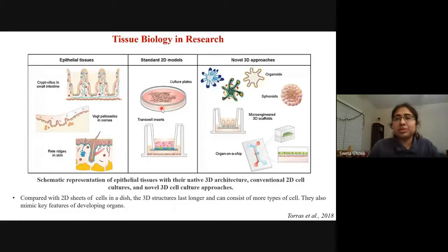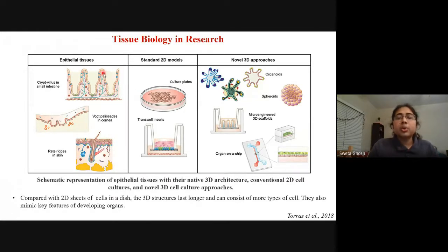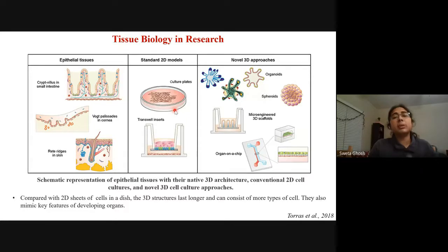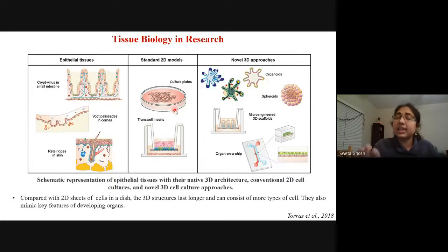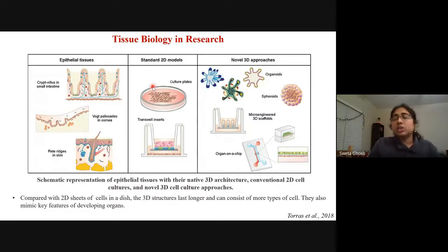Now we need to learn about the impact of tissue biology in research. When we culture cells in a plate — standard 2D models — we think those cells will give us an idea of what cells do in our body. But inside the body the situation is different: there are several other cell types, each doing different work. The GI tract or heart is not just a single tissue or cell type — there is a mixture of connective tissues, smooth muscles, and other things which make an organ. It's very important to know the tissue as such so that we can mimic our real system.